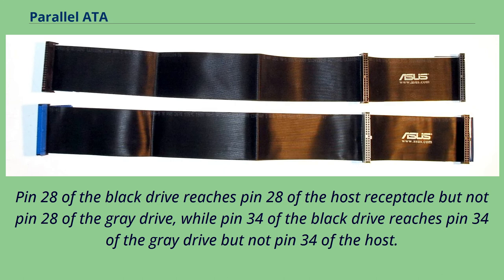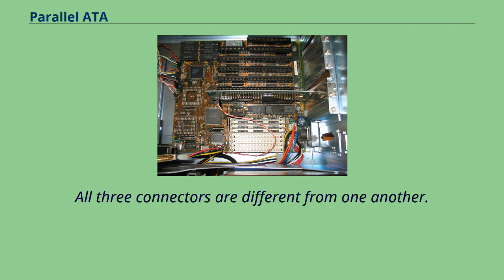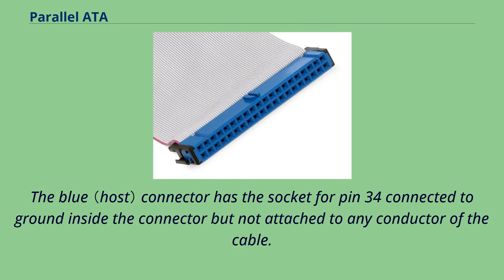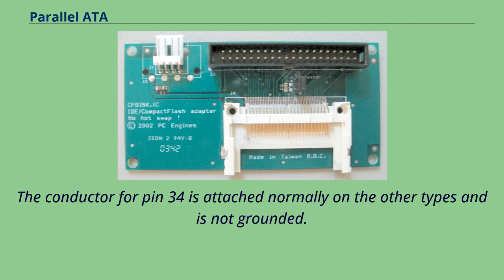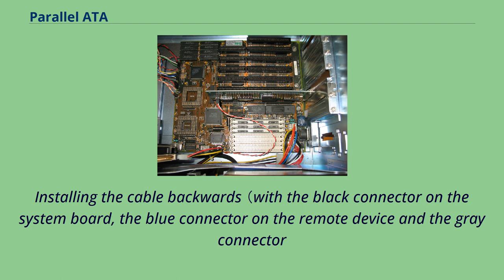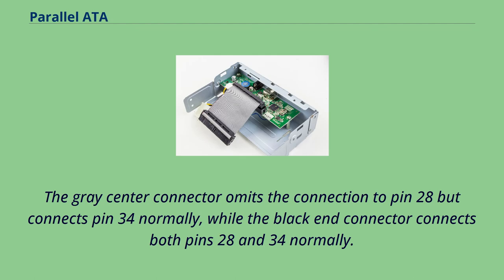The standard dictates color-coded connectors for easy identification by both installer and cable maker. All three connectors are different from one another. The blue connector has the socket for pin 34 connected to ground inside the connector but not attached to any conductor of the cable. Since old 40-conductor cables do not ground pin 34, the presence of a ground connection indicates that an 80-conductor cable is installed. Installing the cable backwards, with the black connector on the system board, the blue connector on the remote device, and the gray connector on the center device, will ground pin 34 of the remote device and connect host pin 34 through to pin 34 of the center device. The gray center connector omits the connection to pin 28 but connects pin 34 normally, while the black end connector connects both pins 28 and 34 normally.